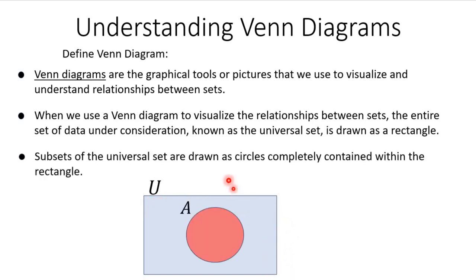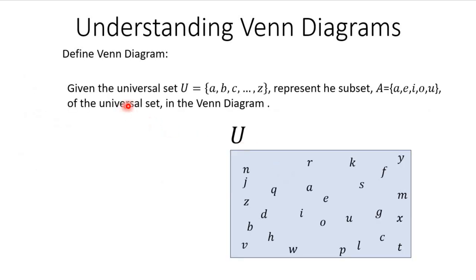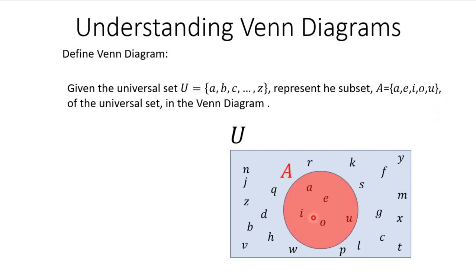Any subset of the universal set will be drawn as a circle completely contained within the rectangle. For example, given the universal set of all 26 lowercase letters of the alphabet, to represent the subset {A, E, I, O, U}, we place those letters in a circle completely contained within the rectangle — giving us the subset A, E, I, O, U of the universal set of 26 lowercase letters.